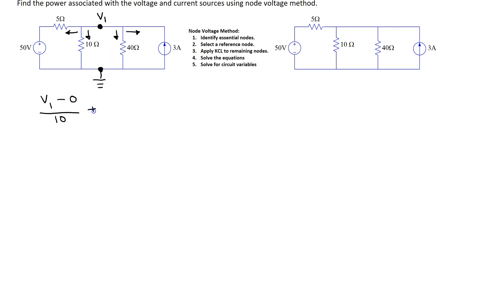The branch current through the 40 ohm resistor is V1 minus 0 over 40. For the third branch current, this branch actually has a current source, so the value of the current must equal the magnitude of the current source. Our assumed branch current direction is opposite to the current source direction, so what we get is minus 3.